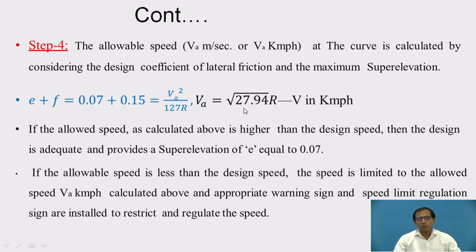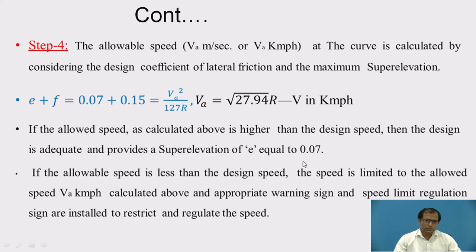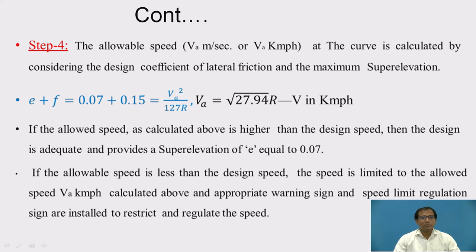In step 4, both E exceeds 7% and F exceeds 0.15, so we restrict the design speed. Using the basic equation with E = 0.07 and F = 0.15, calculate the allowable speed: VA = √(27.94R), where R is the radius in meters and VA is in kmph. Check that this allowable speed is more than the design speed. If VA is higher than the design speed, the design speed is adequate and provide super elevation of 0.07. If allowable speed is lesser than the design speed, limit the speed and put warning signs and speed regulation signs.